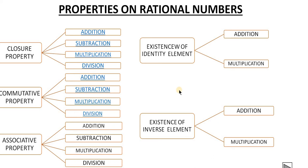There is one more property which is the distributive property — distributive property of multiplication over addition, and distributive property of multiplication over subtraction — that we will study separately. Now we are in the set of rational numbers, and we are going to check whether the properties hold good for the set of rational numbers for all four operations: addition, subtraction, multiplication, and division.